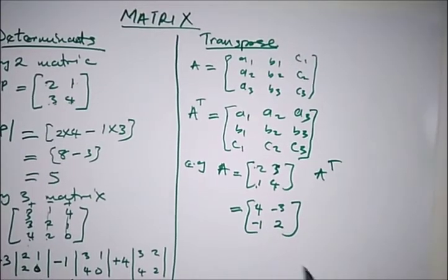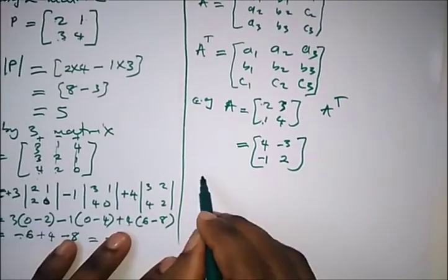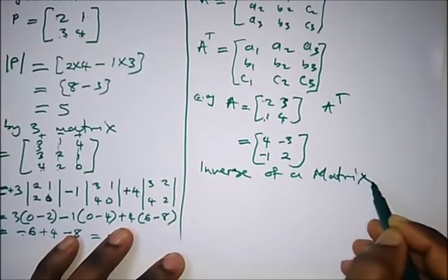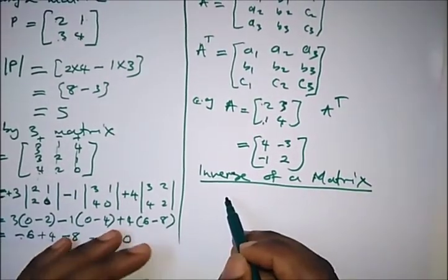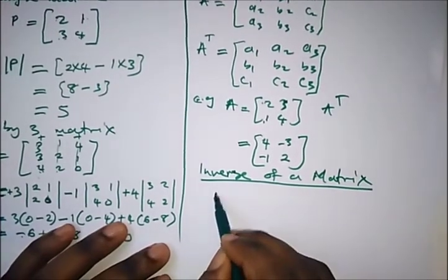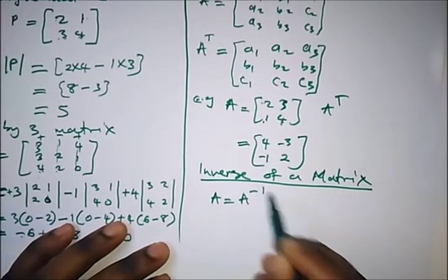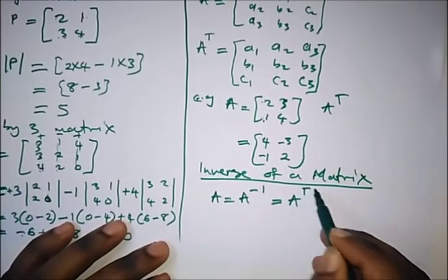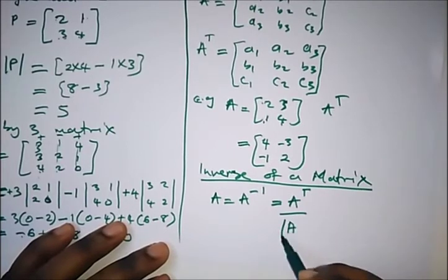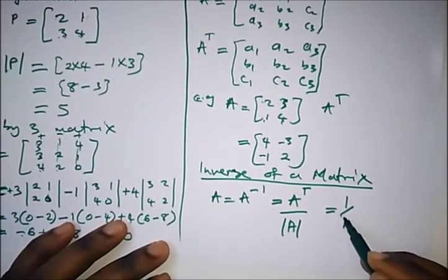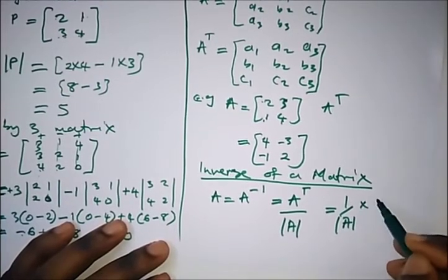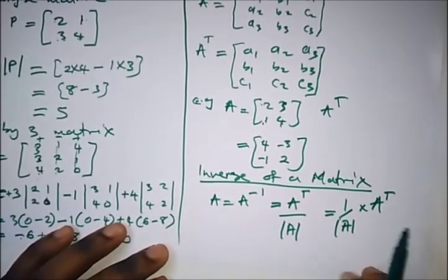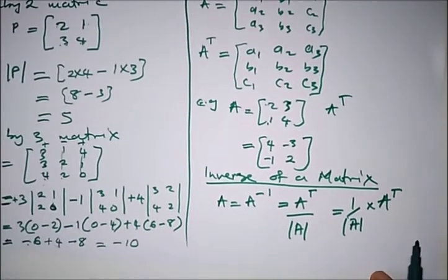Now, how do we get the inverse of a matrix? The inverse of a matrix is gotten by the reciprocal of the given matrix, that is A^(−1). The formula is: A^(−1) equals the transpose of A divided by the determinant of A, which can also be stated as (1 / det(A)) multiplied by A^T. So this is the formula to get the inverse of a matrix.